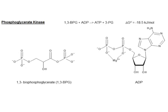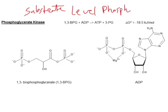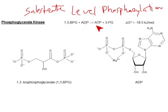Phosphoglycerate kinase comes after our GAPDH step, and it is the first time we're ever going to be able to do a substrate-level phosphorylation — that's where we're going to make ATP directly from our substrate. One of the phosphates here from 1,3-BPG is going to be transferred onto ADP to make ATP directly. So we're going to make an ATP straight off a substrate.